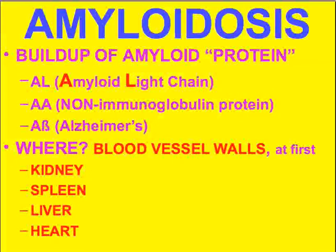Amyloidosis is a very common disease — about as common as old age itself, because amyloid builds up in certain disease conditions, and also in every elderly person in smaller amounts. Amyloid protein was mysterious for many years, but now the exact structure has been worked out and we can see its various types.